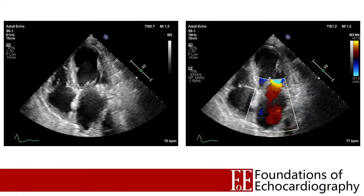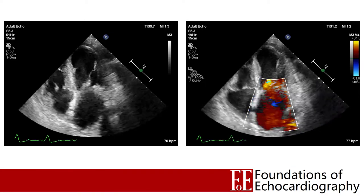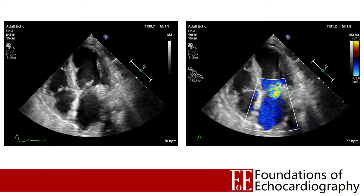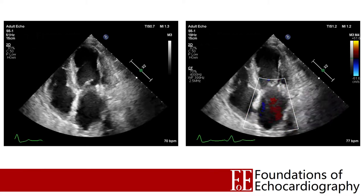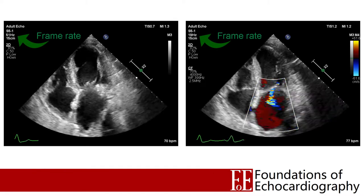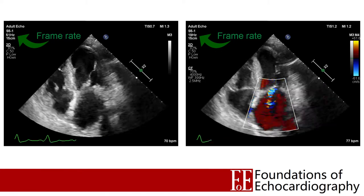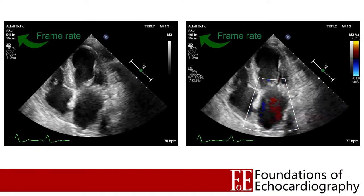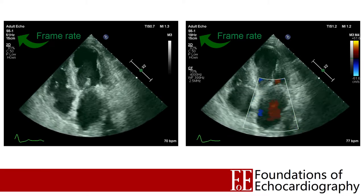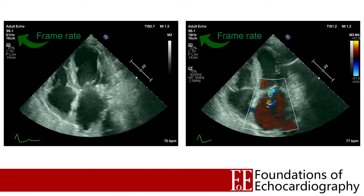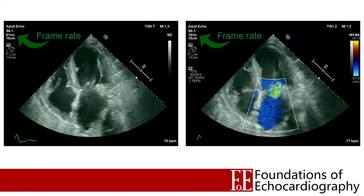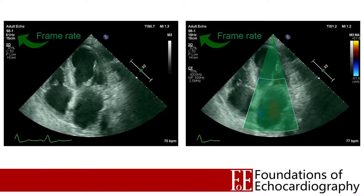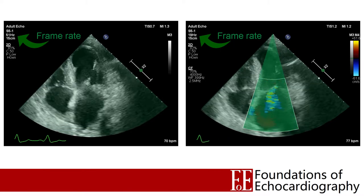The second limitation we need to consider is the impact of colour flow mapping on the frame rate. Here we have two apical 4 chamber views side by side with identical sector width and depth, but the image on the right has the addition of a colour box over the left atrium. Without the colour box we've got a frame rate of 51 frames per second, and when we add the colour box our frame rate drops to 19. Why is this occurring? The scanlines passing through the box must be scanned multiple times in order to gather enough information to calculate the phase shift and hence estimate the velocity of the blood travelling in that area.